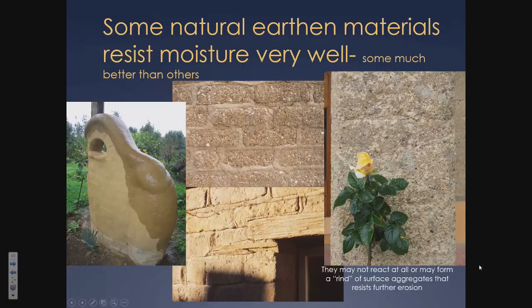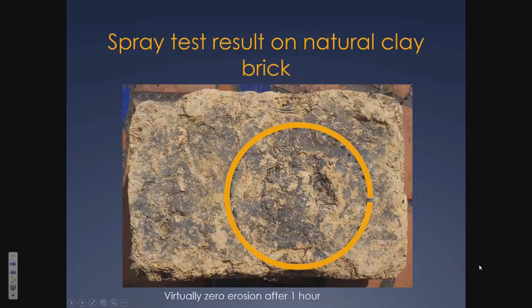We know some earth materials resist moisture very well, some much better than others, some don't even react. I found an old mud brick that a guy in his 90s had built a little earth brick shed from — to prove he could build out of this material. The brick had been lying out in the weather for something like 40 years. You could still see the guy's fingerprints in the surface. I did the spray test on this particular brick and it did nothing — nothing at all. It's just a clay material. We did try making bricks from it but it's incredibly hard to liquefy enough.